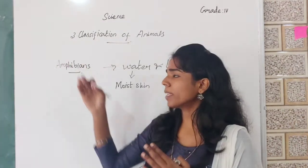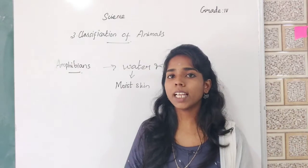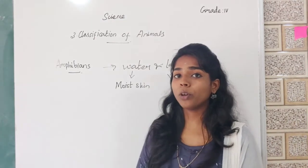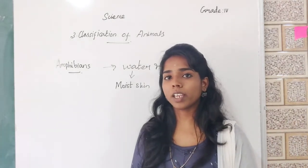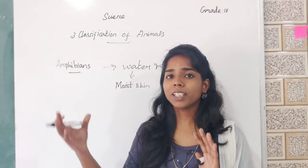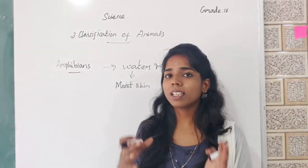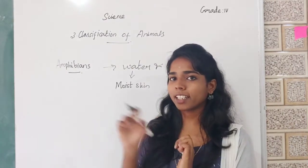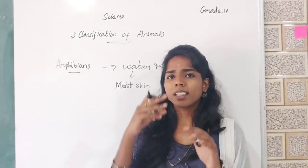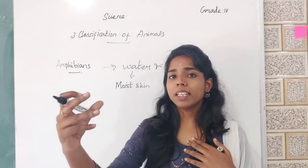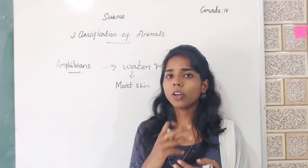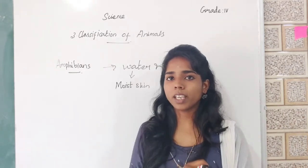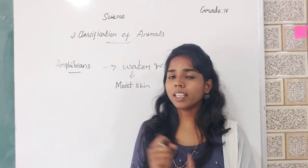Like amphibians, the frog can breathe with the help of lungs when on land, and when in water, they breathe with the help of moist skin. Frogs croak during the rainy season to attract their partner. A frog has a long and sticky tongue so that it can easily catch insects.